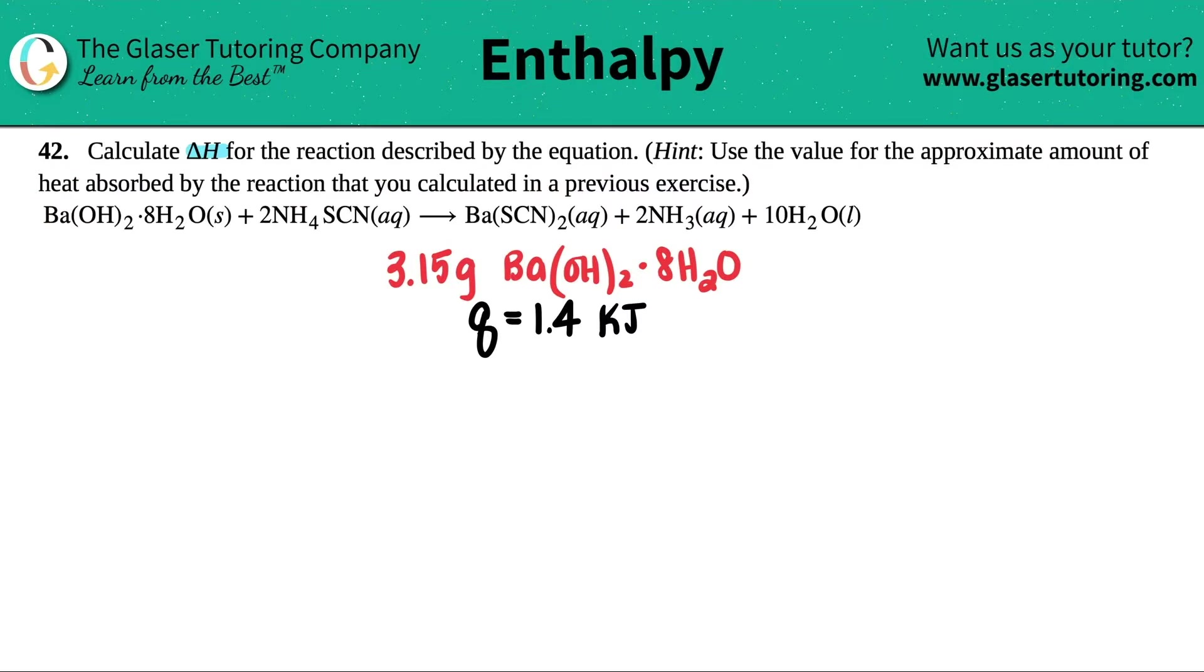And then we have the equation that they gave us. Now we did this problem. This is number 27 in the chapter. So if you're on the playlist, all you got to do is go back to number 27. And what I did was I went back there and just wrote down again the information needed to answer this problem. If you guys need a refresher and you go back to number 27, you'll see that for that specific reaction, it produced 1.4 kilojoules of heat. Q is heat. And there was 3.15 grams of this barium hydroxide octahydrate.